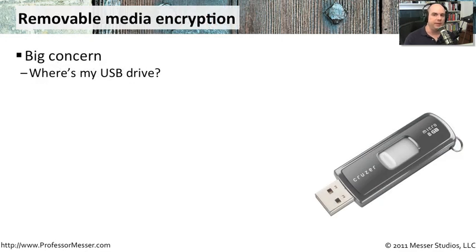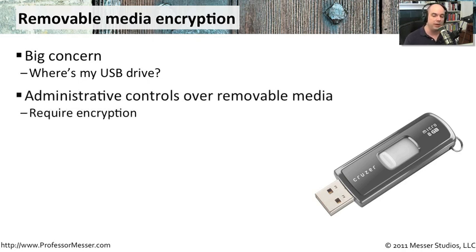Encryption on removable media is so important because, as the name implies, you can remove it and take it with you. Unfortunately, these tiny USB keys are very easy to lose — a USB drive can get lost just in a bag. If we make sure we're encrypting all of the data on removable media, we can be a little more safe if we happen to lose that USB drive.